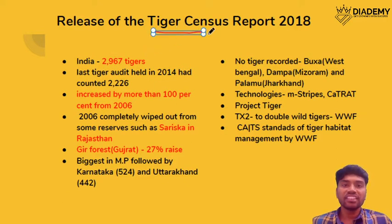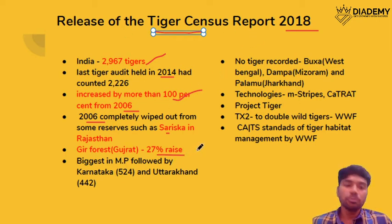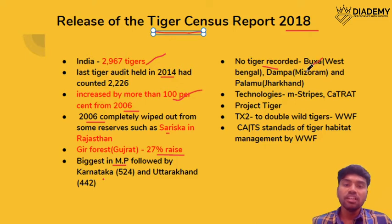The next topic is the Tiger Census 2018. Presently India has 2967 tigers, a more than 100% increase with respect to 2006, when tigers were completely wiped out in Sariska, Rajasthan. According to this report, the highest rise was in Gir forest at 27%. State-wise, Madhya Pradesh is first, followed by Karnataka and Uttarakhand. The report also says no tigers were recorded in Buxa (West Bengal), Dampa (Mizoram — also known for highest forest cover), and Palamu (Jharkhand).